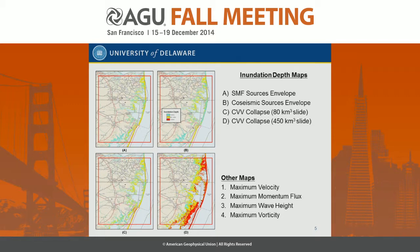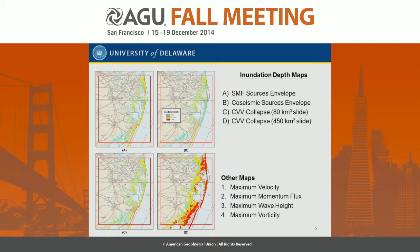Using the data we have, we generated maps for different areas on the East Coast. For example, this is an area close to Ocean City, and these are the inundation depth maps we generated. Figure A shows the envelope for the submarine mass failure sources. Figure B shows the envelope for the co-seismic sources — basically the Puerto Rico source, since the Lisbon source is very small in comparison. The two figures on the bottom show the Cumbre Vieja for 80 cubic kilometers and 450 cubic kilometers. Since the CVV 450 is significantly larger than the other sources and its return period falls beyond 10,000 years, we excluded it from the inundation line calculation. However, we did generate maps for that source.